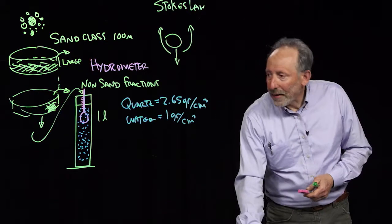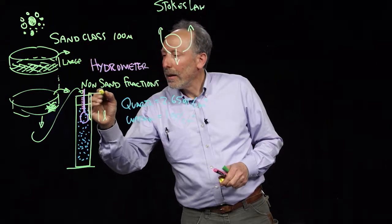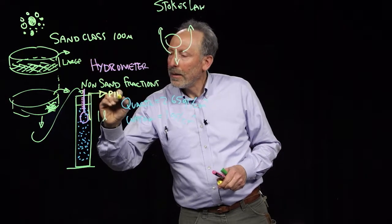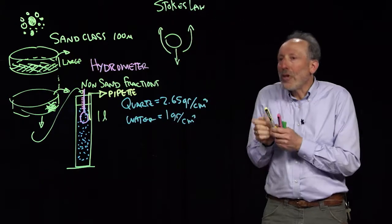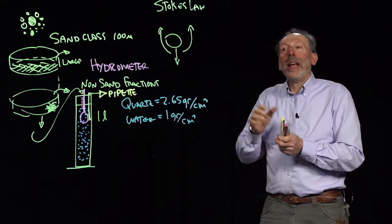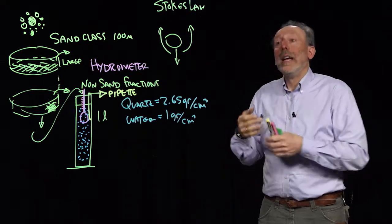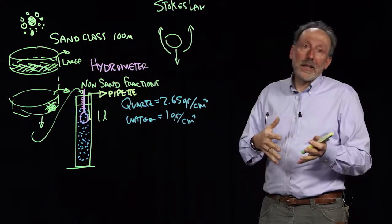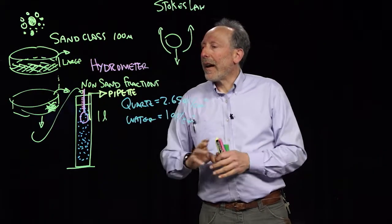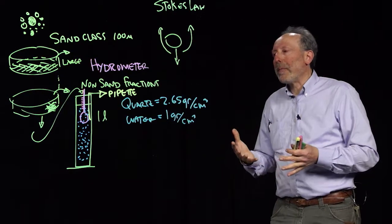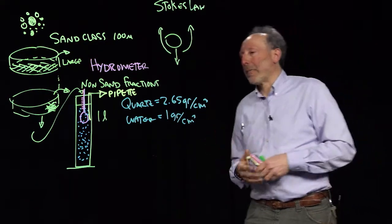Another way we could have done this is actually put in a little sampling pipette. We could put a pipette in there and draw out samples in time and then dry those samples and see what is in the solution. Once again, assessing the density in time. So fundamentally the pipette method and the hydrometer method are trying for the same outcome. That is to get the density of the solution in time and thereby get the particle size distribution.